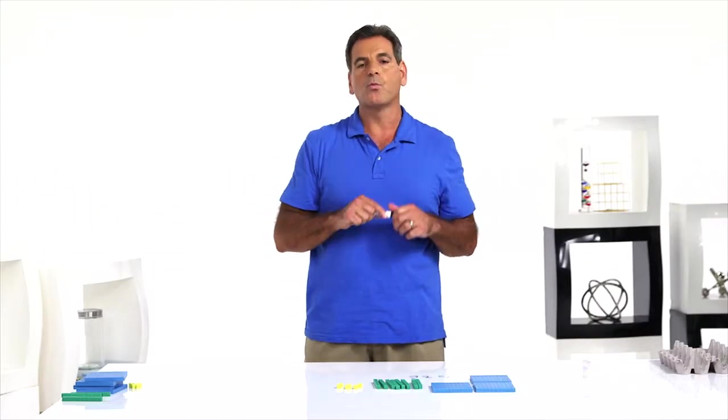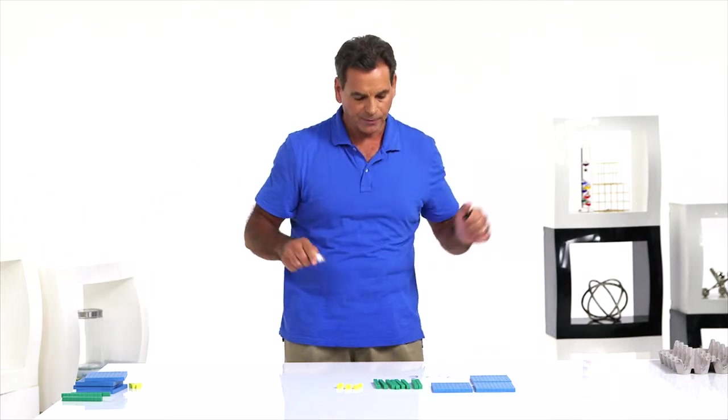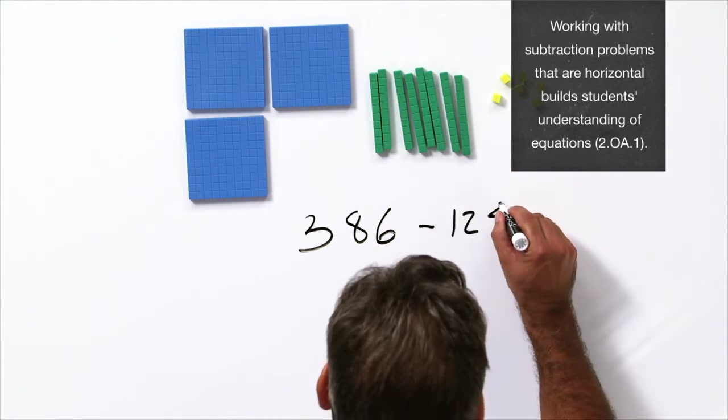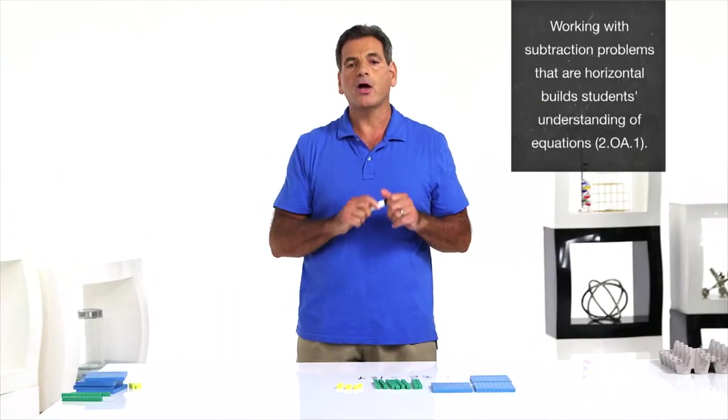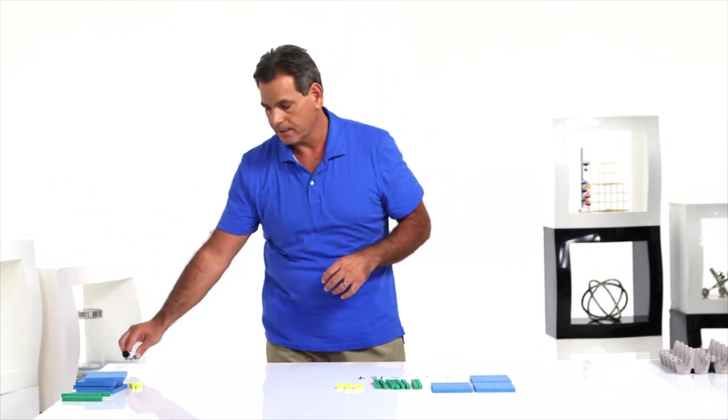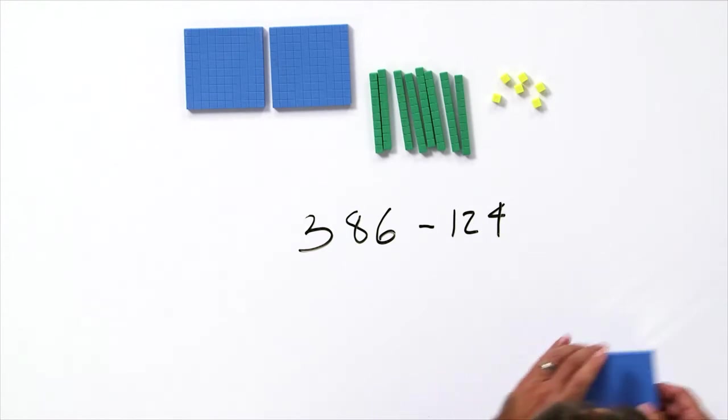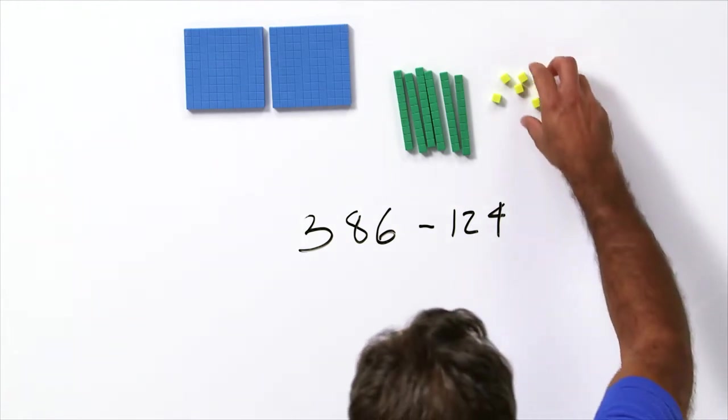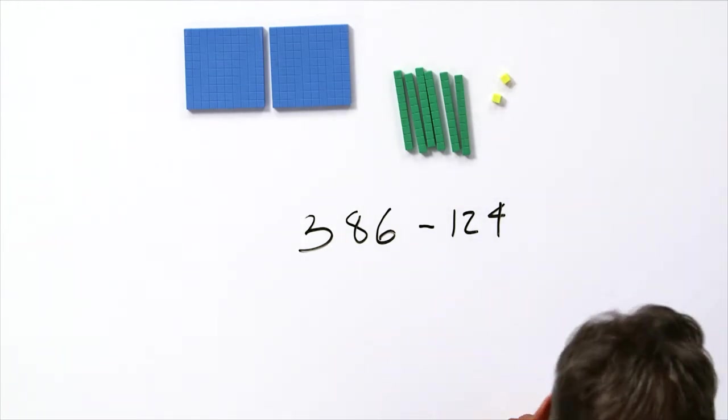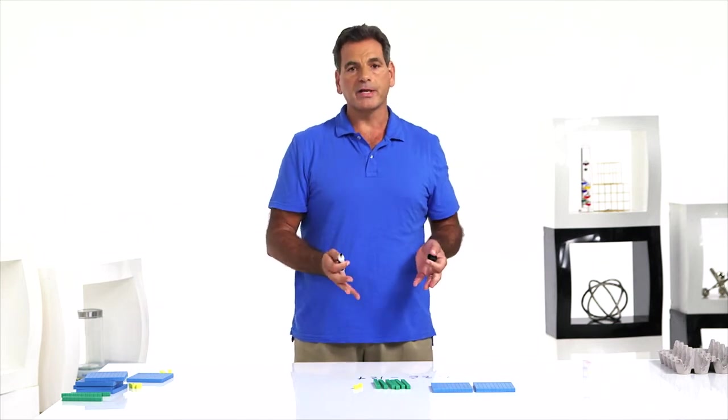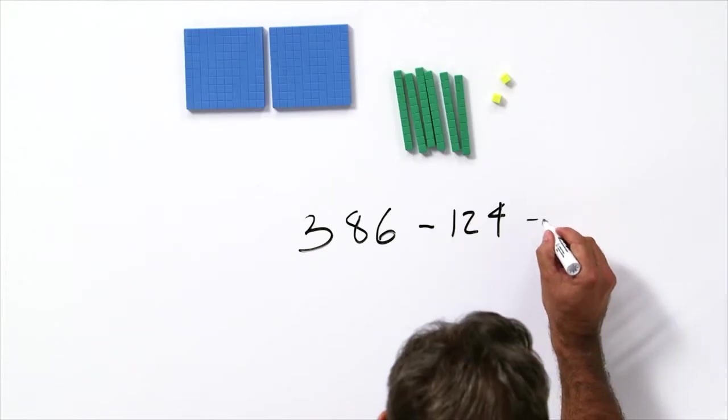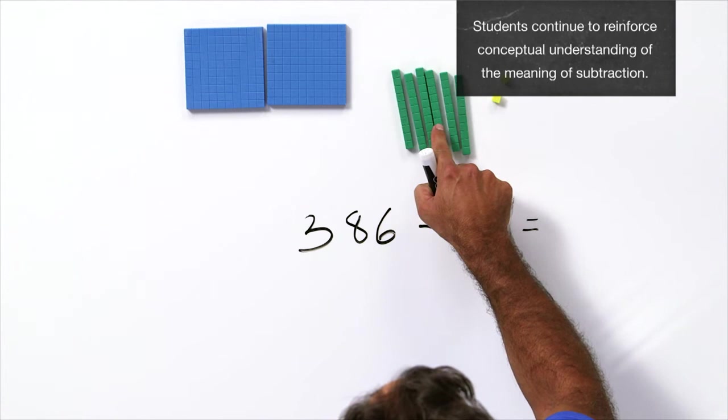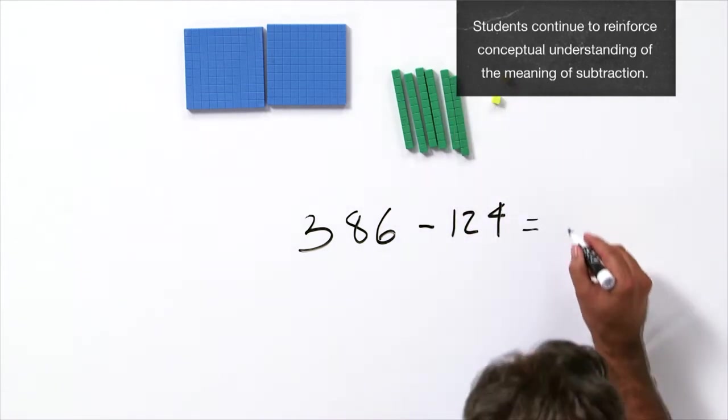Now tell the students we want to subtract 124. So let's write that expression. 386 minus 124. And ask the students to start in the hundreds place and begin taking away base 10 blocks. We're going to take away 100. We're going to take away two 10s. We're going to take away four 1s. Now have students solve the problem simply by reading the number that's left. 386 minus 124 equals 262.